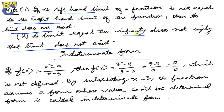The value of a limit can be 0. Indeterminate form: if f(x) is x squared minus 9 divided by x minus 3, then f(3) is 3 squared minus 9 divided by 3 minus 3, which gives 0 by 0, which is not defined. So by substituting x equal to 3, the function assumes a form whose value cannot be determined. This form is called the indeterminate form.